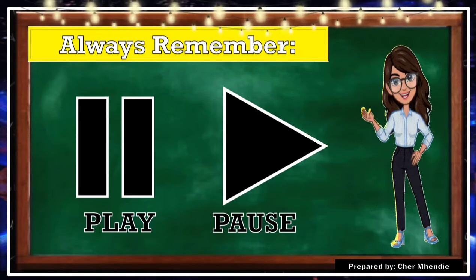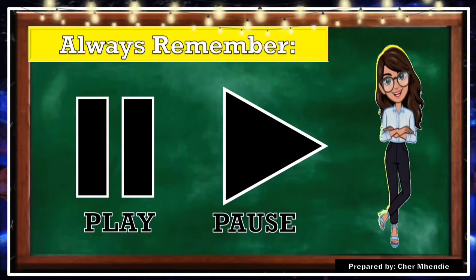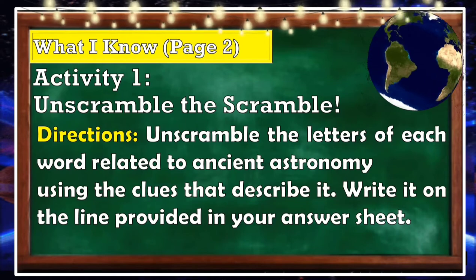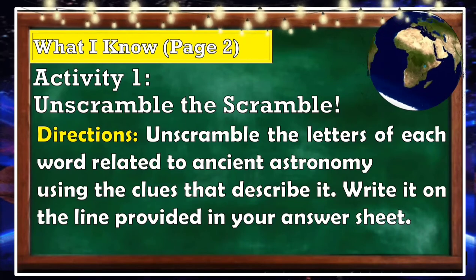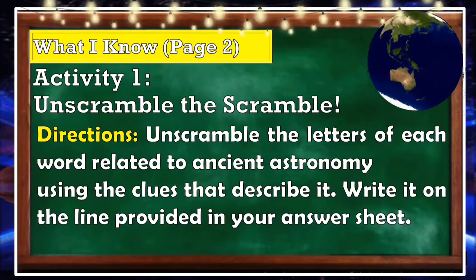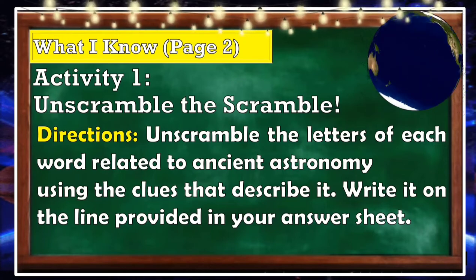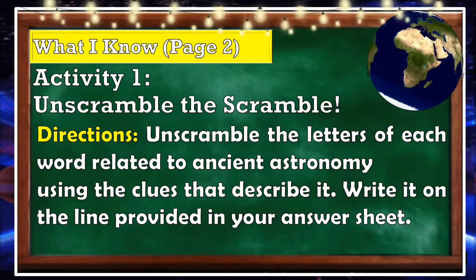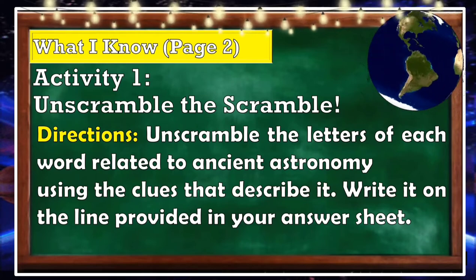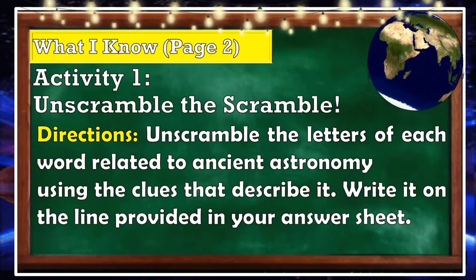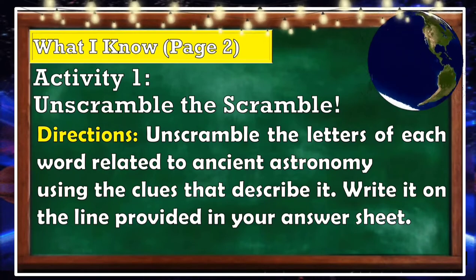Let's start with our pre-assessment, 'What I Know,' in your module on page 2. Activity number one is titled 'Scramble.' Directions: Unscramble the letters of each word related to ancient astronomy using the clues that describe it. Write it on the line provided in your answer sheet.